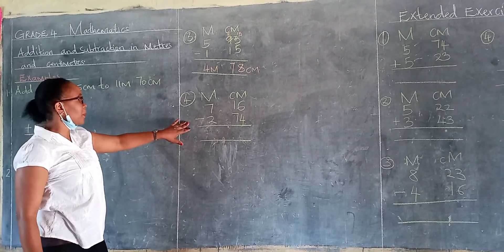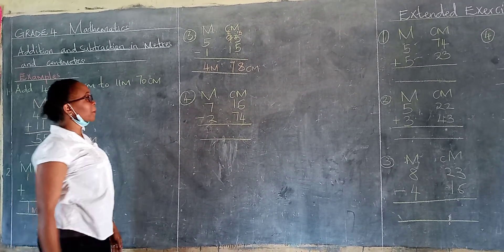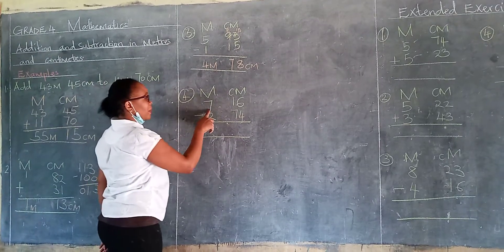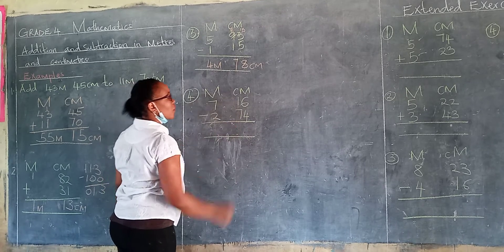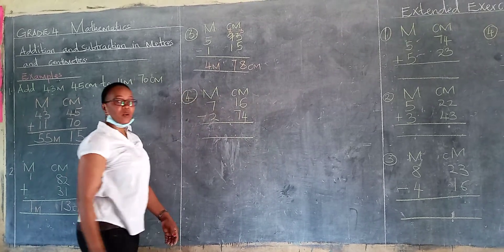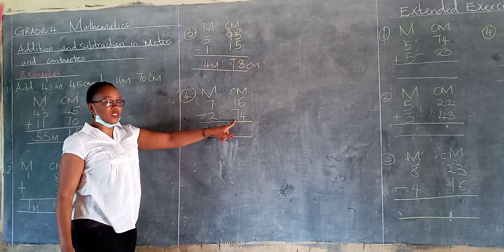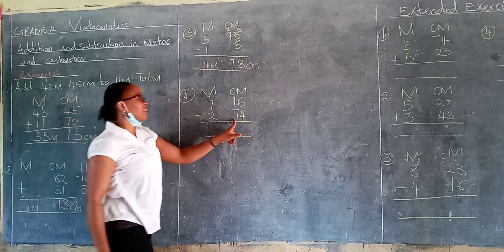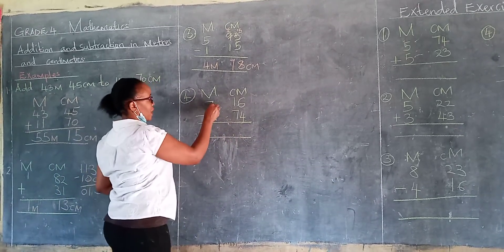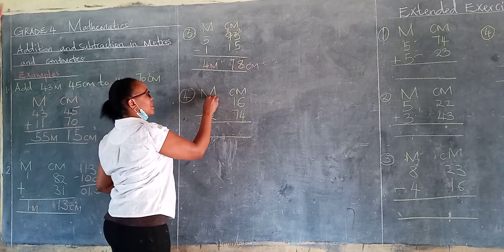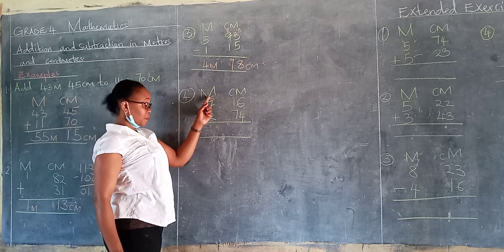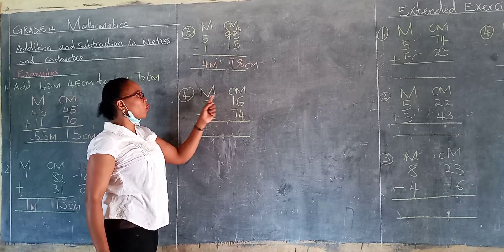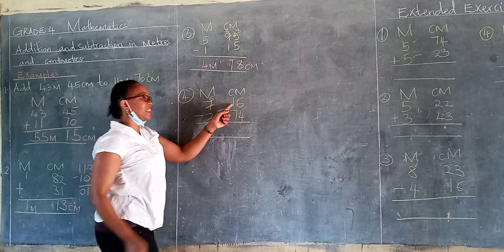Let's see the last example, learner. I hope you are following me. 7 meters 16 centimeters. You take away 2 meters 74 centimeters. Now, learner, can 16 take away 74? The answer is no. So we have to borrow here. It remains 6. Remember, we have borrowed in the side of meters. So if we take to the other side, we are taking 1 meter is equals to 100 centimeters.